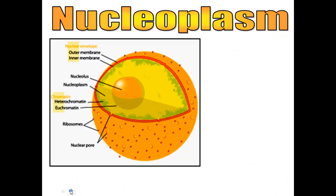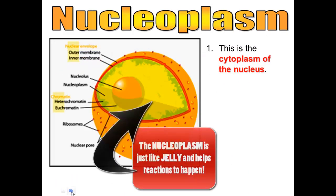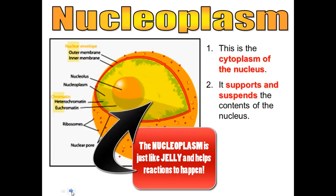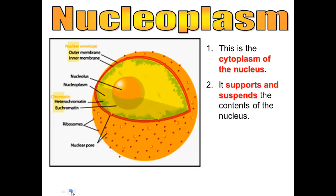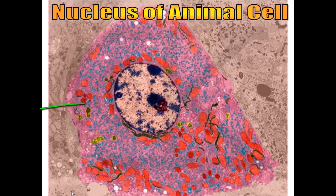Next we'll talk about the nucleoplasm. The nucleoplasm is basically just the jelly-like cytoplasm that's inside the nucleus. It's very watery, and what it does is it supports all of the chromatin, the nucleolus, and all of the proteins and enzymes sitting inside the nucleus. In this picture you can see the nucleus and the nucleolus of an animal cell.